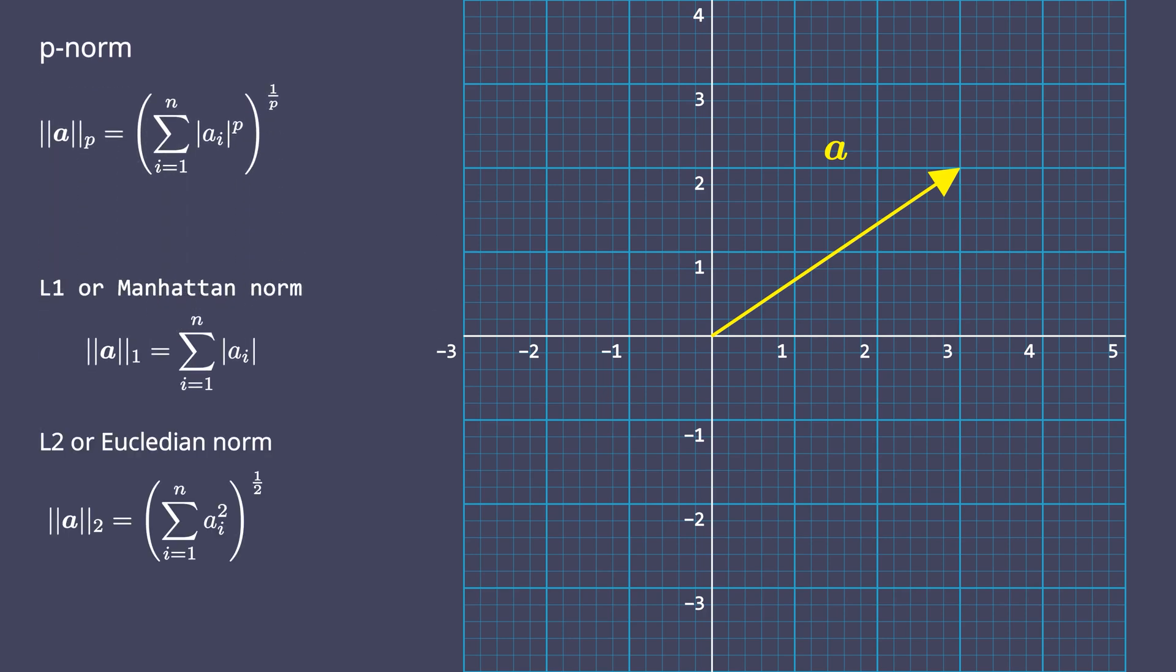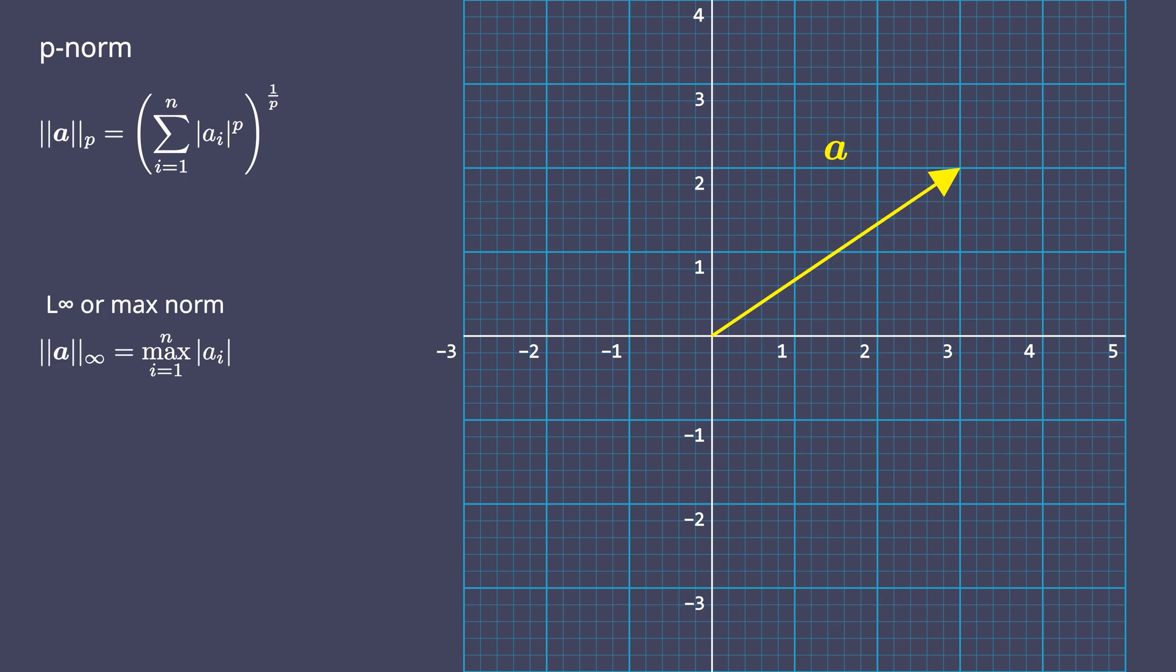Note that if you substitute P equals 1, you have the equation for L1 norm. P equals 2 gives you the equation for L2 norm and similarly you can substitute any value K greater than equals 1 for P to calculate the K norm. Three norms derived from P norm are popular in machine learning. We have discussed two of them, L1 and L2 norm and the third is L infinite norm or the max norm.